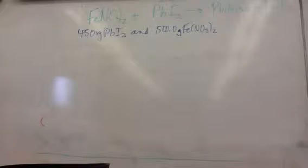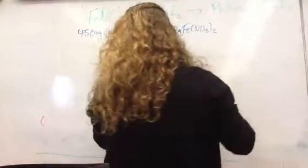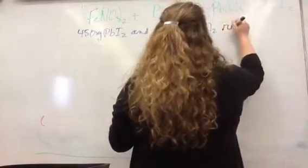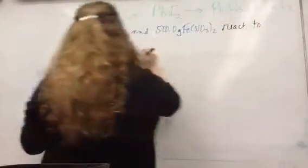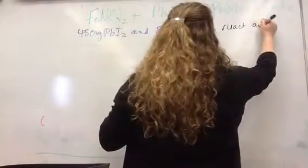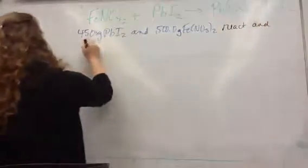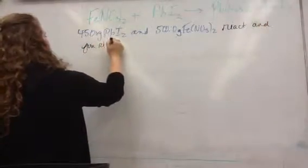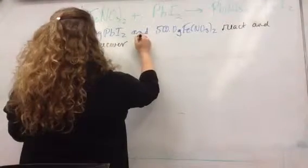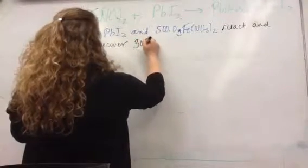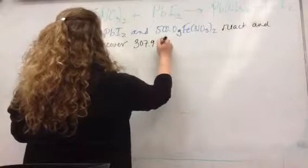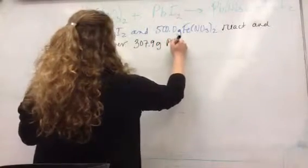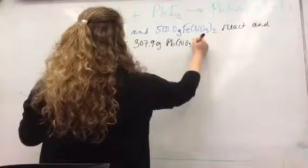So we've got those same numbers, 450 grams of lead-2 iodide, 500 grams of lead-2 nitrate. Now what I'm about to tell you is that these two react and you recover 307.9 grams of lead-2 nitrate.